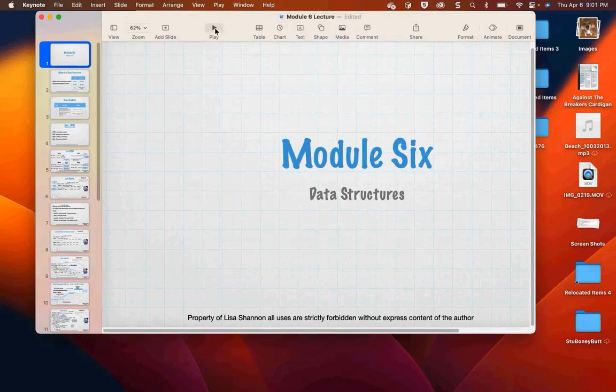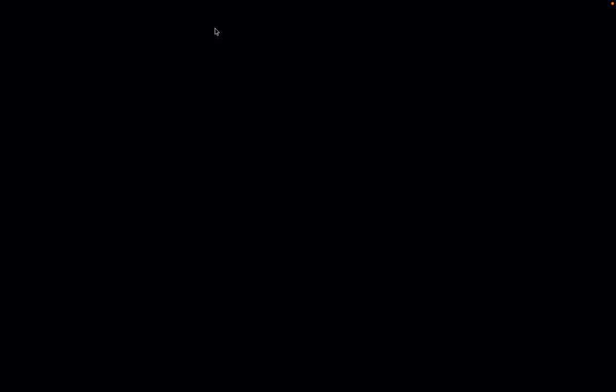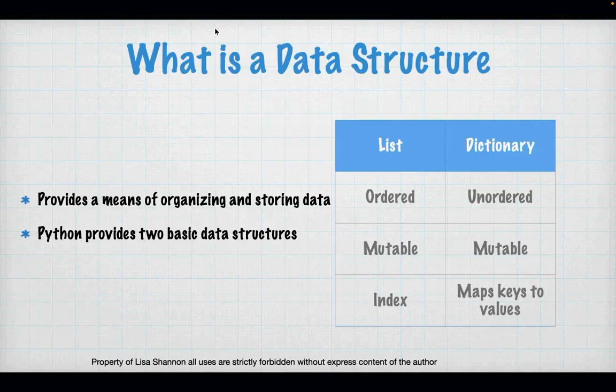Tonight we're talking about data structures — lists and dictionaries. Lists and dictionaries are the two structures provided by Python, and they're very handy. A lot of programming languages do not provide a dictionary; you have to implement your own. Python gives you a dictionary and it's very, very handy.